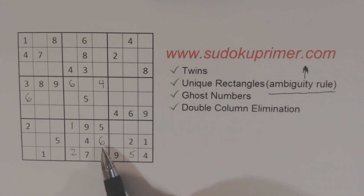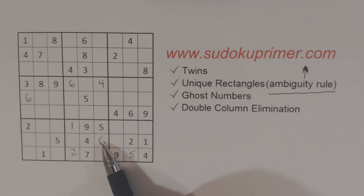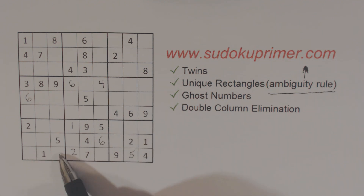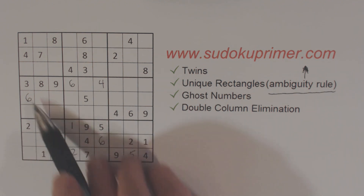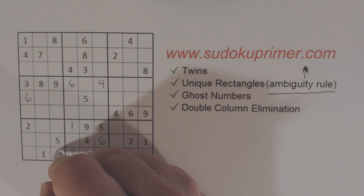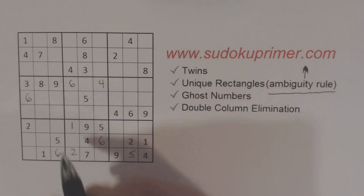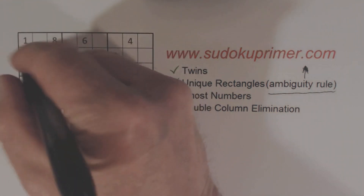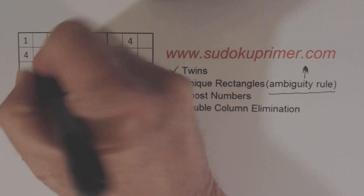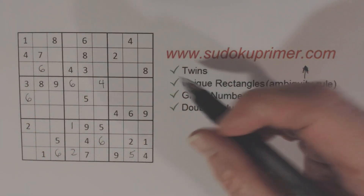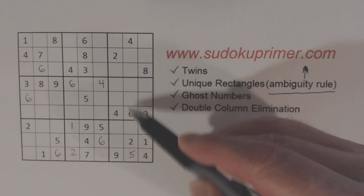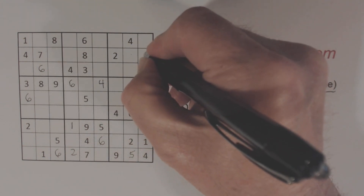And with that six, we can probably find some more sixes. There's a six here, ghost sixes there, so one of those is a six — and therefore that has to be a six right there. Six, six, six — so that's a six. And then six, six, six — so that's a six there too.